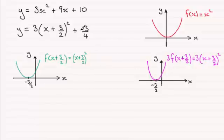Now we're nearly there because all we need to do now is add 13 quarters. And when you add 13 quarters to a function, what happens is that the graph translates upwards parallel to the y-axis by 13 quarters of a unit.